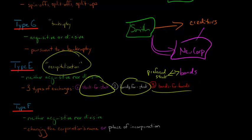Type F, similar to Type E, is not acquisitive nor divisive. You're not going out and acquiring some other firm or something. What you're doing is you're changing the corporation's name or the place of incorporation or something like that. It's not quite as exciting as the other ones, but it does qualify as a tax-free reorganization.